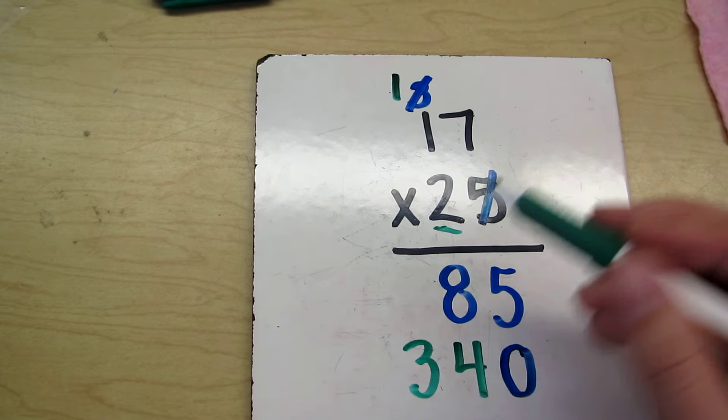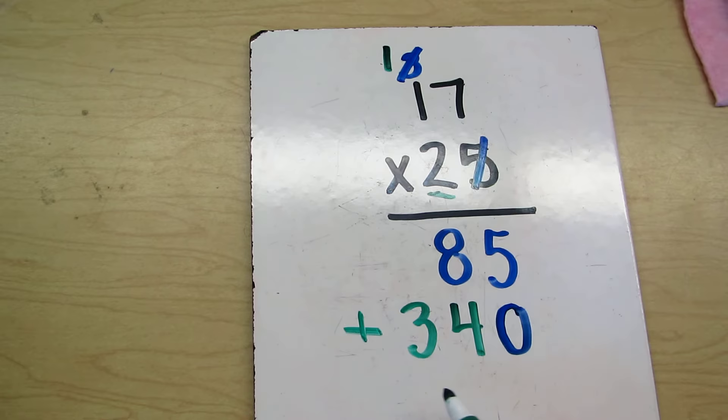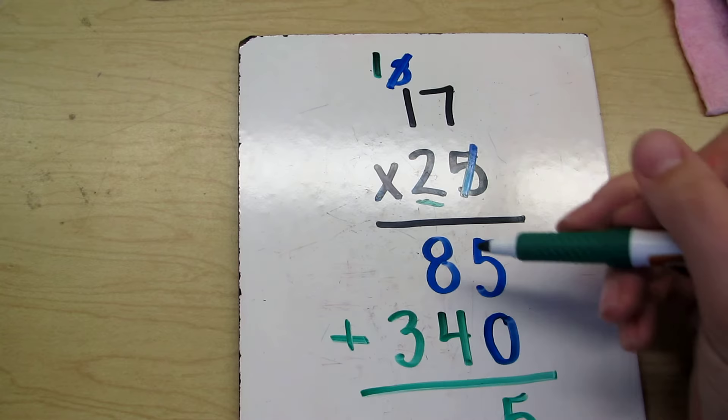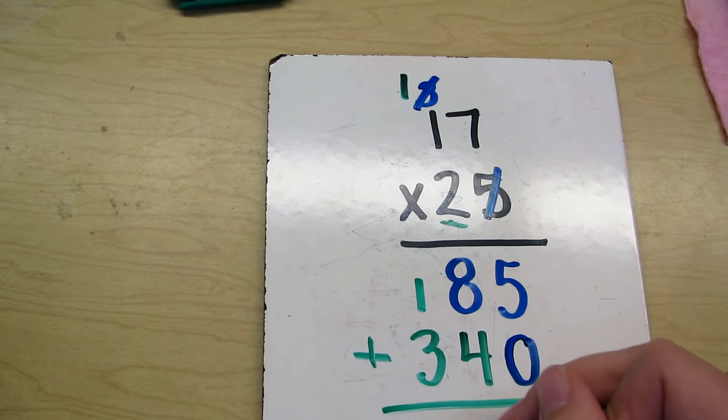And so now after we did our 1s and our tens, we're going to add them together. 5 plus 0 is 5. 8 plus 4 is 12. And 1 plus 3 is 4. And the answer is 425.